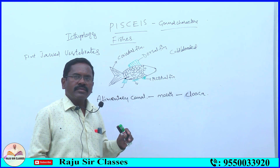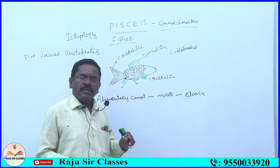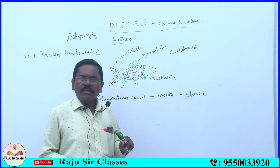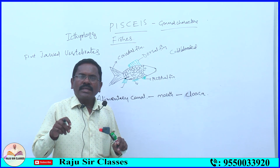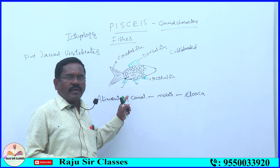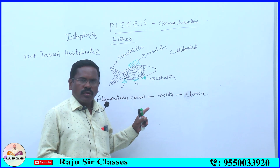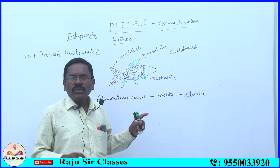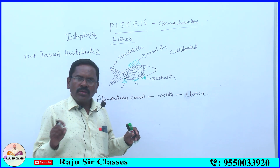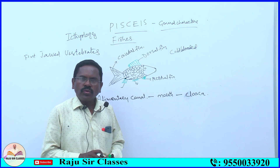Gonoducts are the ducts of gonads. In the female reproductive system, gonoducts are oviducts; in the male reproductive system, gonoducts are vasa deferentia. So vasa deferentia and oviducts both open out through cloaca. Through cloaca, fecal matter is discharged, urine is released, and gametes are also released.